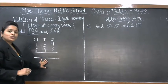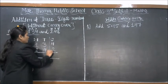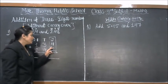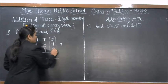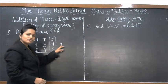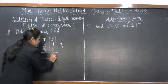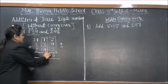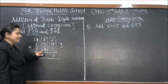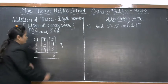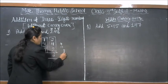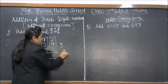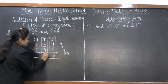First we add the ones column. In ones we have 4 and 2. Keep 4 in our mind and draw 2 lines: 1 and 2. Counting on: 4, 5, 6. Answer is 6. Next is the tens column. In tens we have 3 and 4. Keep 3 in mind and draw 4 lines. Counting: 3, 4, 5, 6, 7. Answer is 7.